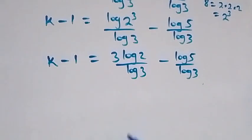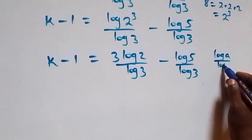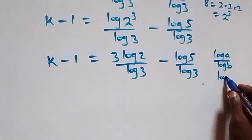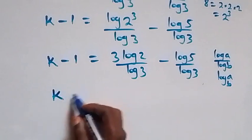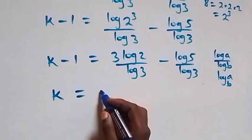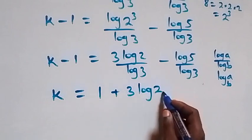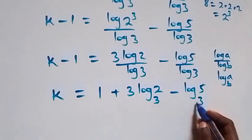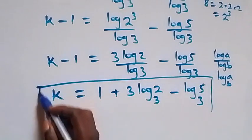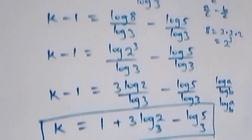Applying the change of base rule — log a over log b is the same as log a to base b — this gives us k equals to 1 plus 3 log 2 to base 3 minus log 5 to base 3. So the value of k in this given problem is 1 plus 3 log 2 base 3 minus log 5 base 3.